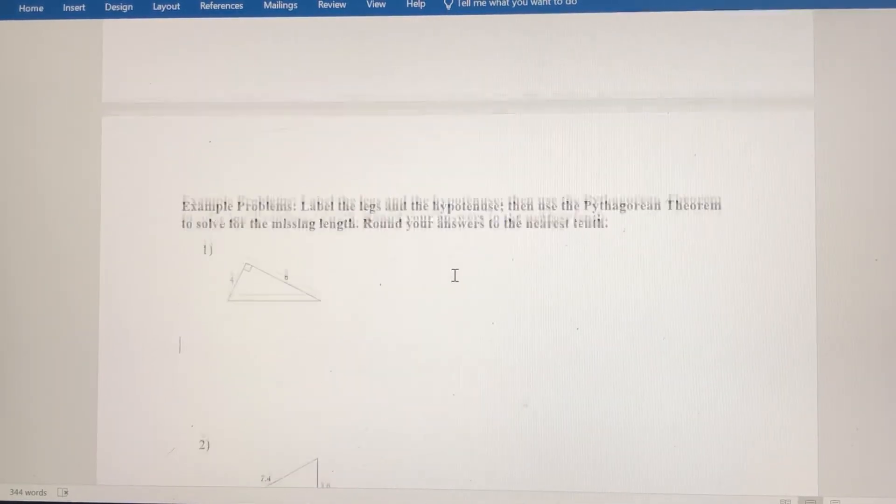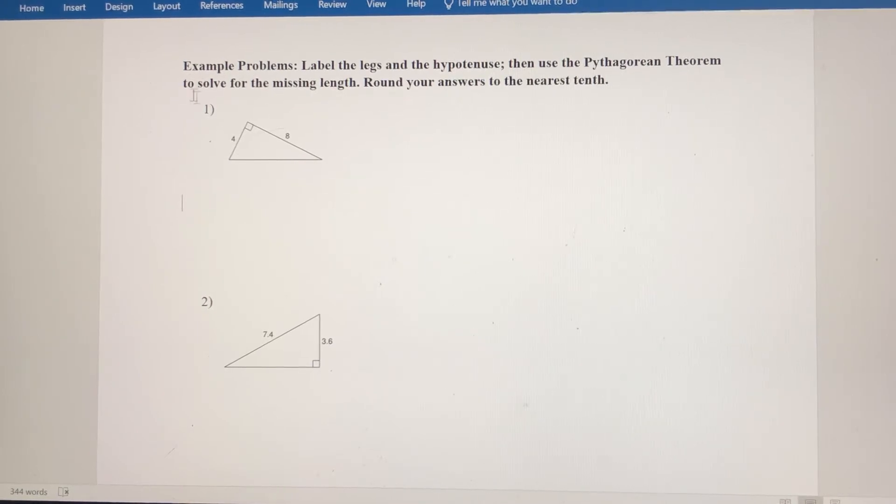So let's do a couple example problems. So in number one, first thing I need to recognize is that I have the legs. So this is a leg, and this is the leg because these two sides form the right angle. The missing side over here is the hypotenuse because it's opposite the right angle. So we're going to be solving for c here. So I'm going to call a = 4 and b = 8. If you want to reverse those, that's perfectly fine. And we're going to be solving for c, so I've got a question mark there.